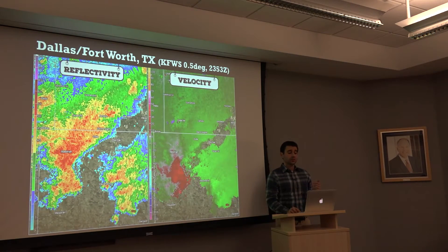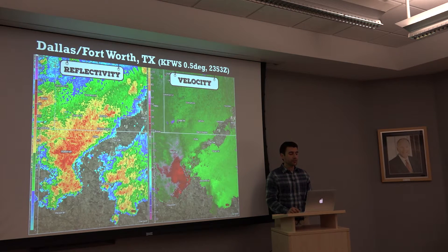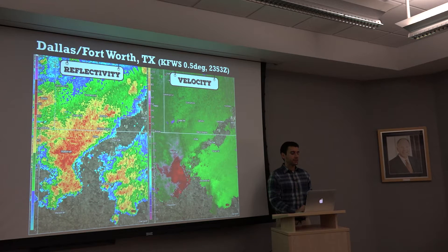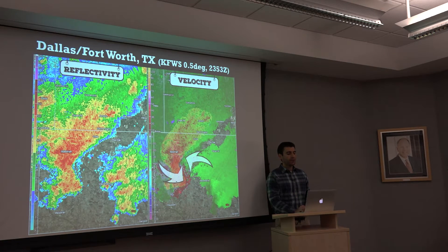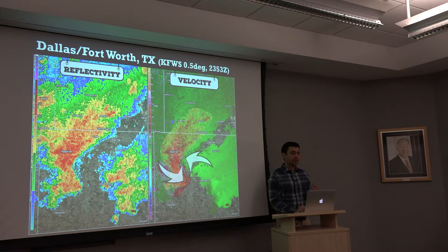We're going to use a real example — from Dallas–Fort Worth, just south of Dallas County, the day after Christmas 2015, when we had multiple tornadoes across the DFW metroplex. On the left is reflectivity, on the right is velocity. We can already see a nice supercell-type structure. We can see outbound winds on the southern and rear flank of our cell, and inbound winds with our radar located off to the north and west — a nice area of inflow wrapping around the side of this supercell.